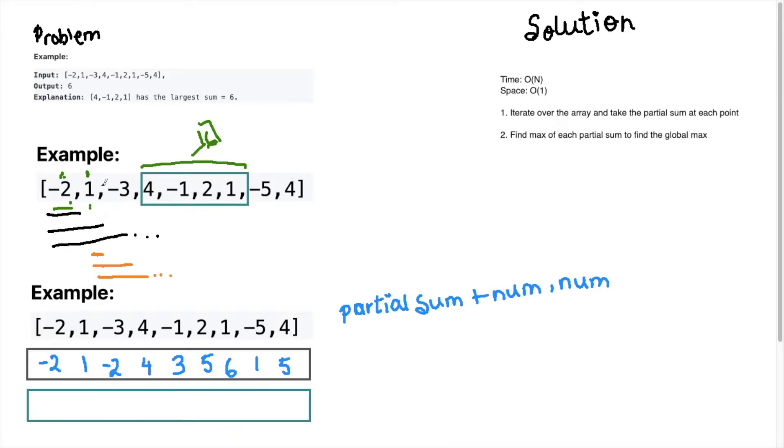So imagine you have only two items here, you have negative two and one. And in this case, what you need to ask yourself at this point is, is my sum going to be greater if I take the full sum or if I just take the one here?